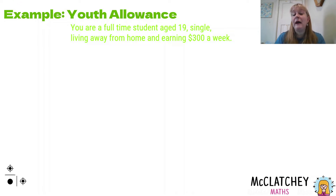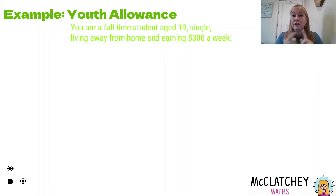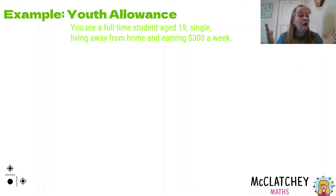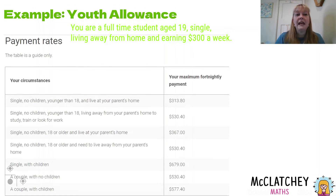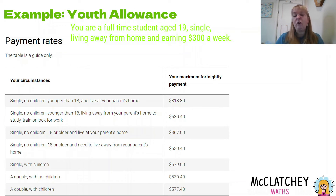So let's look at our example. We've got a full-time student — they fit the qualification for youth allowance. They're age 19, so they're between 16 and 24 — they fit the second qualification too. They're single, living away from home, and earning $300 a week. Now this is the table you're going to be looking for when you go online for your PSMT. Notice it says 'this is a guide only' — meaning in real life, what you actually get paid could differ slightly, and it could be less.